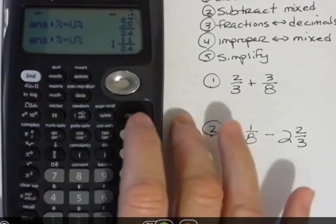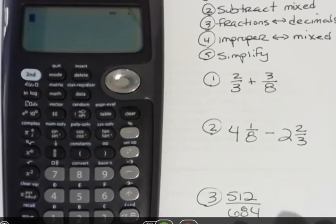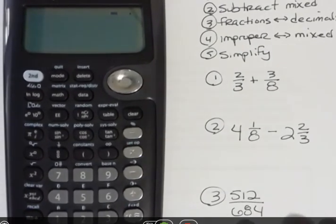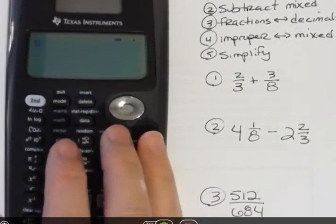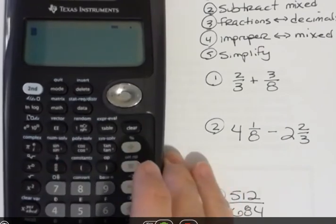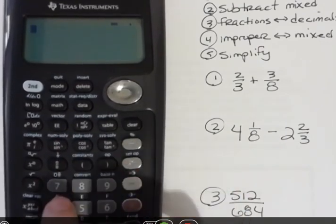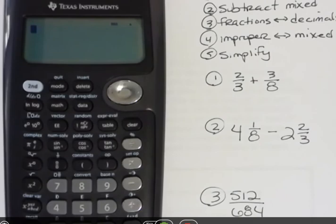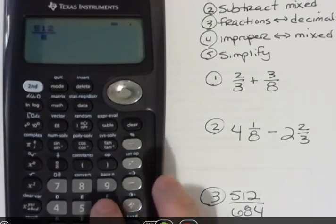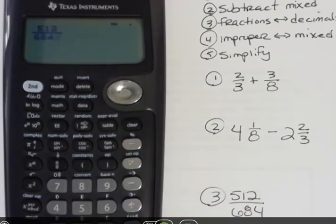If I just have a fraction that I want to simplify, let's say I have this 512 over 684, and I'm wondering, can it be simplified? I have been showing you to hit the fraction button and then enter your fraction. You could also just go ahead and enter the numerator and then hit the fraction, and it's going to put it into the fraction at that point. That's another way to use that button. 684. And then if I hit enter, if it's simplifiable, it will do that for me. So I have 128 over 171.